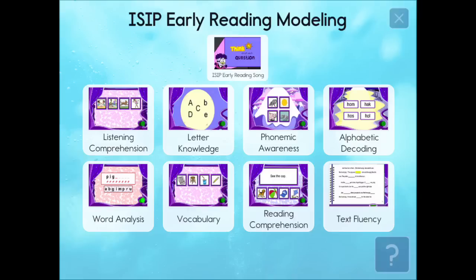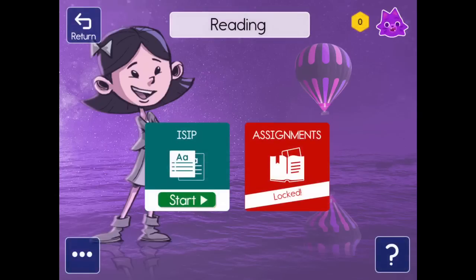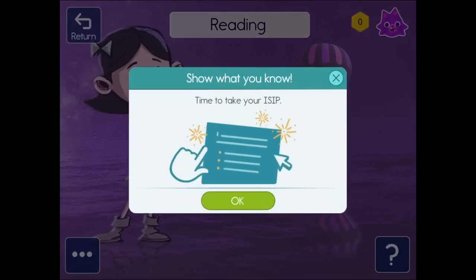The activity will provide an example and then give your child an opportunity to practice. Before each new activity in the ISIP assessment, they will also be given an opportunity to practice. When your child is ready to begin the assessment, go back to the reading screen and click Start under ISIP.